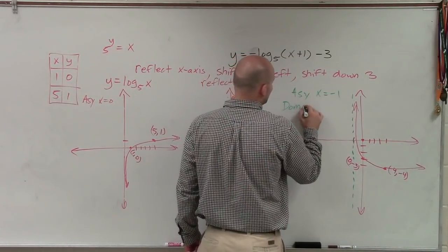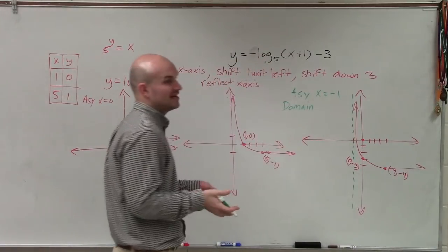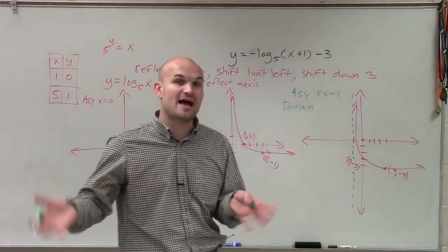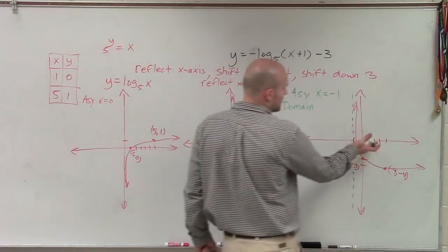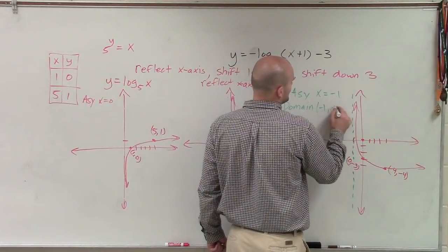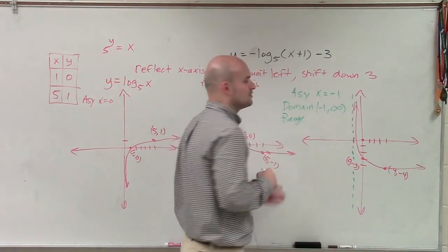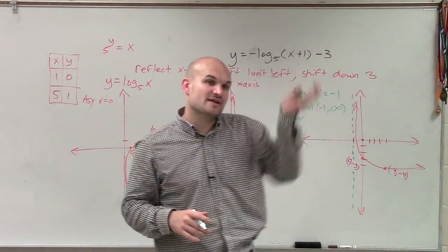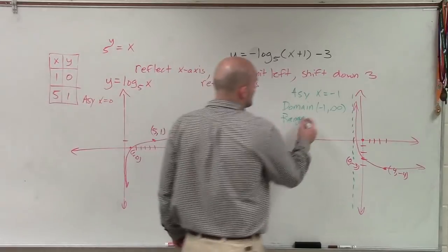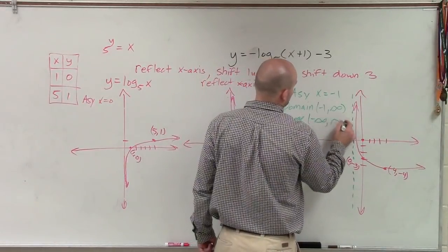Therefore, the domain is going to be the set of all x values that we can evaluate for this function. So that's going to be from all the values of negative 1 to infinity. And our range, since a logarithmic graph increases to infinity and decreases to negative infinity, our range is going to be from negative infinity to infinity.